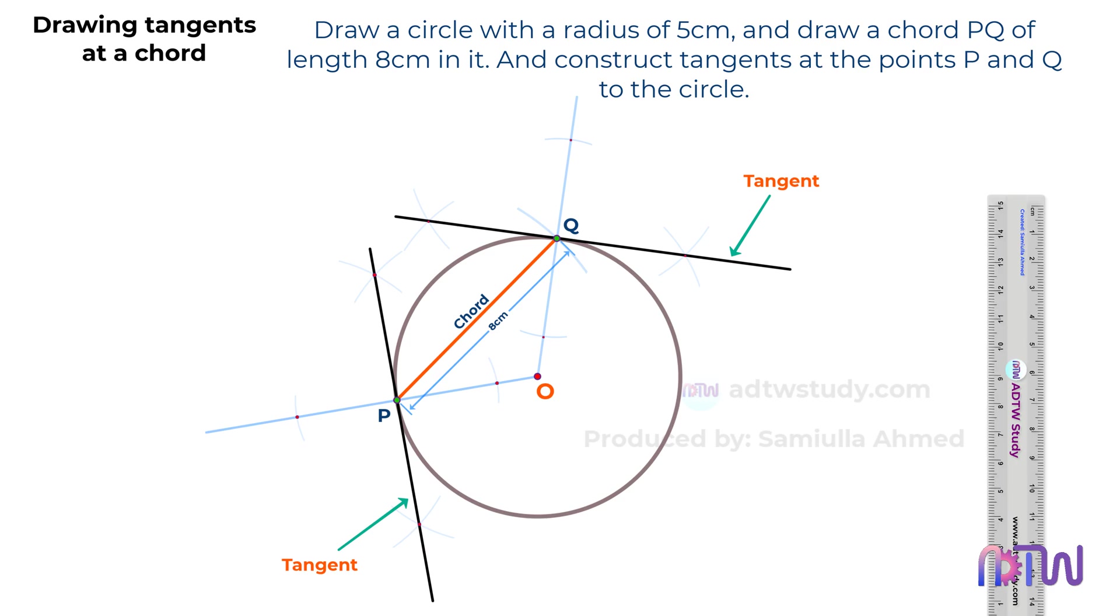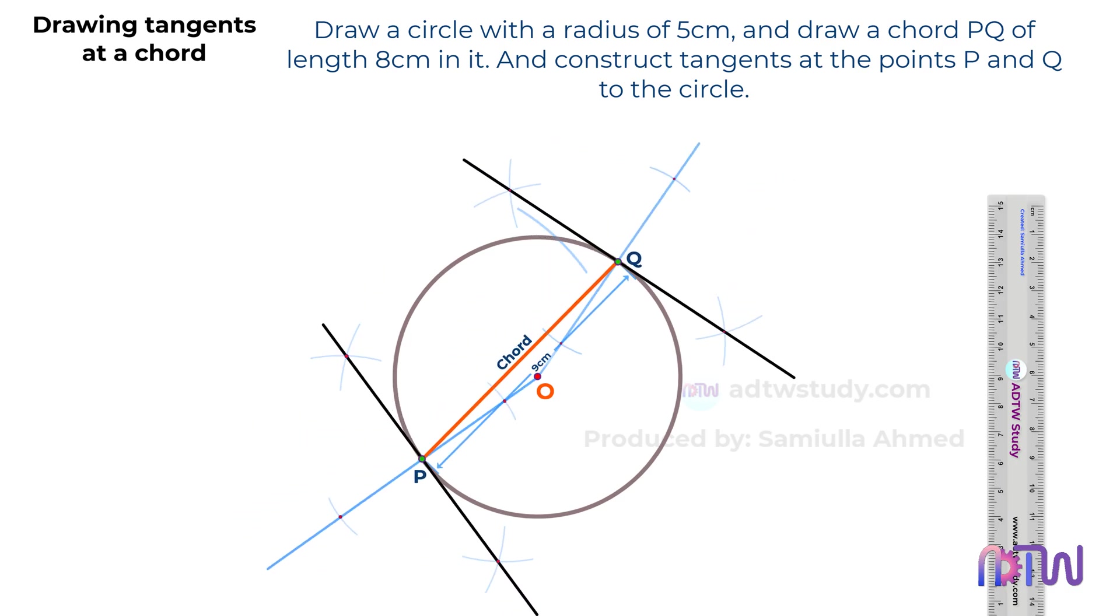And there you have it. This is how we construct the tangents at the endpoints of the chord. The method for drawing tangents to a chord remains the same, regardless of the chord's length.